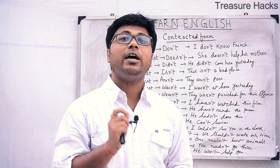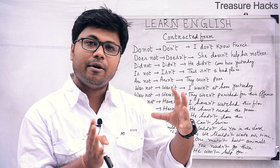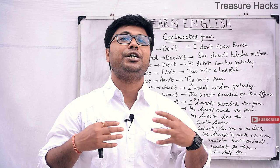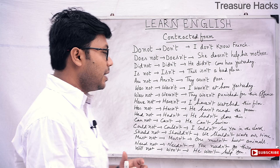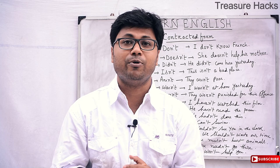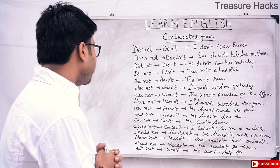Next, among regular modal auxiliaries, 'cannot' in contracted form or short form is 'can't'. In American pronunciation it's 'can't' — He can't swim. Next, 'could not' — 'could not' in contracted form is 'couldn't'. For example: I couldn't see you in the dark.